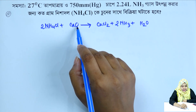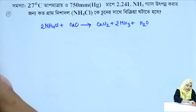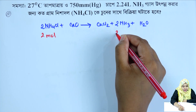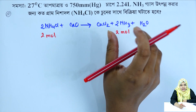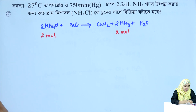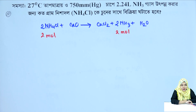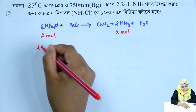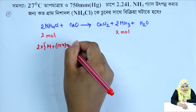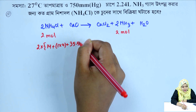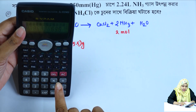For today's problem we need oxygen. We take 2 mol ammonium chloride. The molecular weight calculation: nitrogen is 14, hydrogen is 1 × 4, plus chlorine 35.5 grams. So 14 + 4 + 35.5, multiplied by 2.